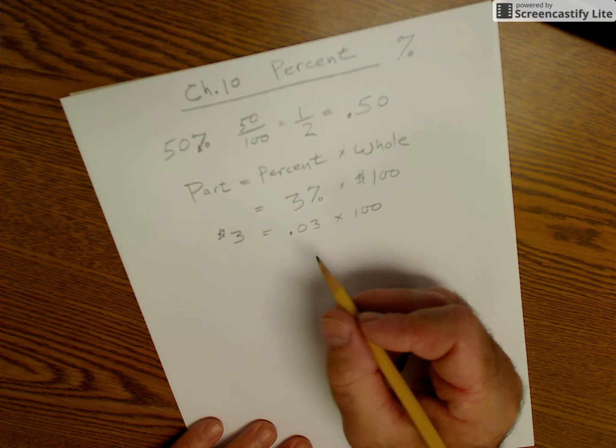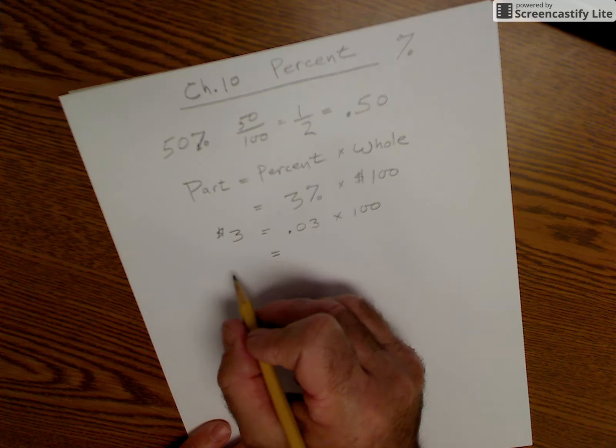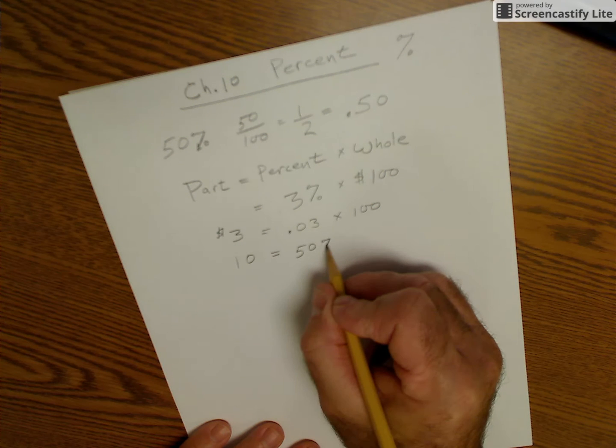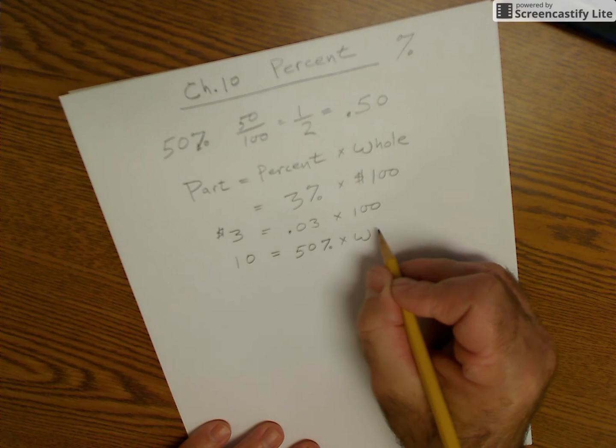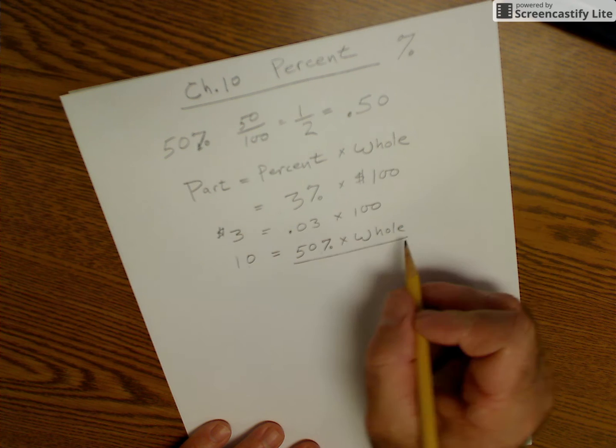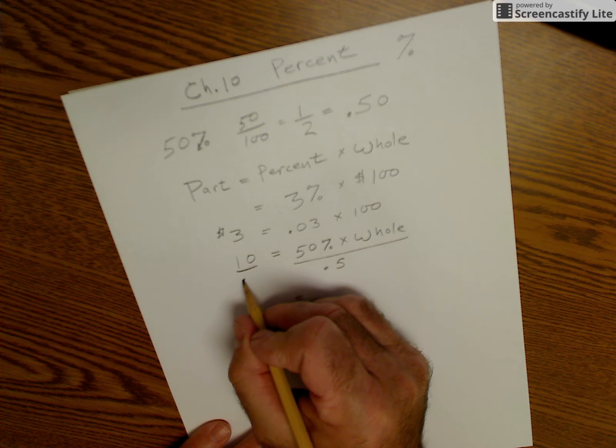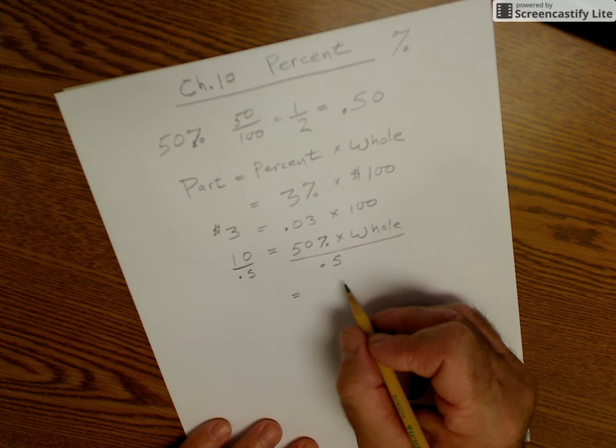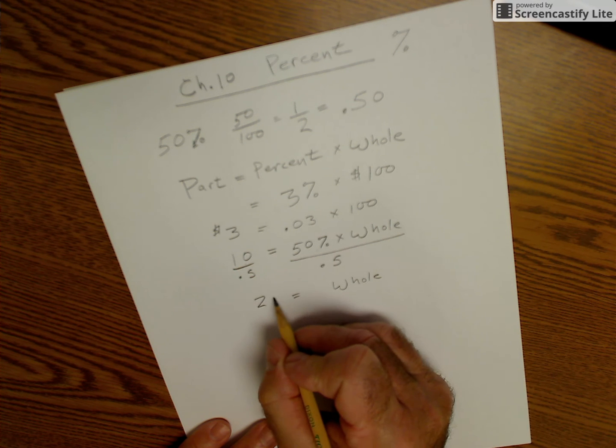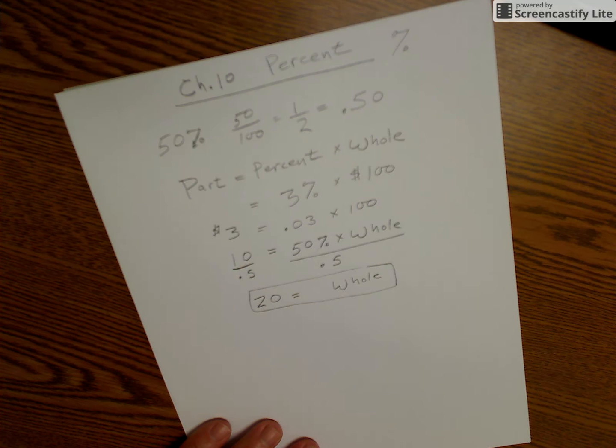A different example is if I had the part, let's say the part is 10, and I want to know what 50% times the whole. So if the part is 10, the percent is 50%, what is the whole, I would divide both sides by 50% or 0.5. Those would cancel. I divide this by 0.5, and I could see that the whole is equal to 20. So the whole would be equal to 20 times 50% to get the part that's half of that or 10.